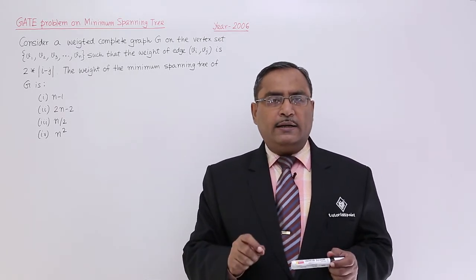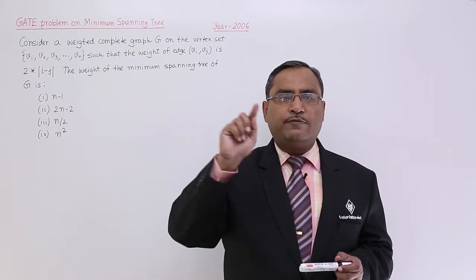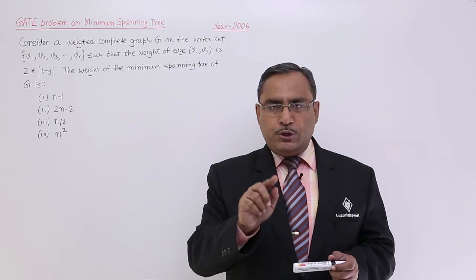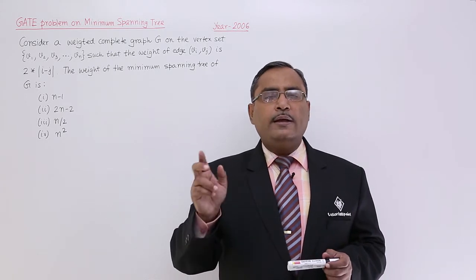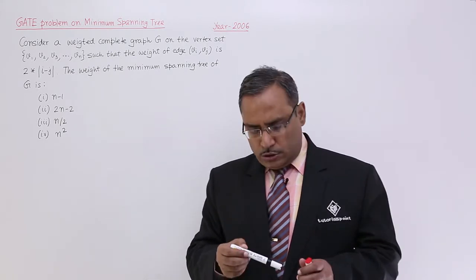It is quite simple that from V1 always I should go to V2, I should not go to V4. Why? Because in case of V1, V2 the edge weight will be 2, because 2 into |2-1| or |1-2|, whatever you are doing, absolute of that you are getting 2×1 = 2.